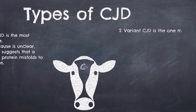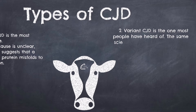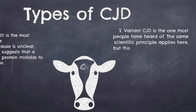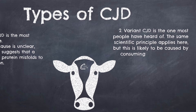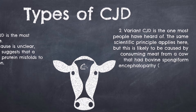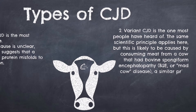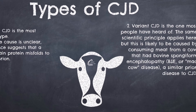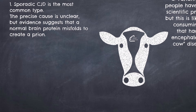Variant CJD is the one that most people have heard of. The same scientific principle applies here, but this is likely to be caused by consuming infected material, such as meat from a cow that had bovine spongiform encephalopathy, or mad cow disease, which is a similar prion disease to CJD.